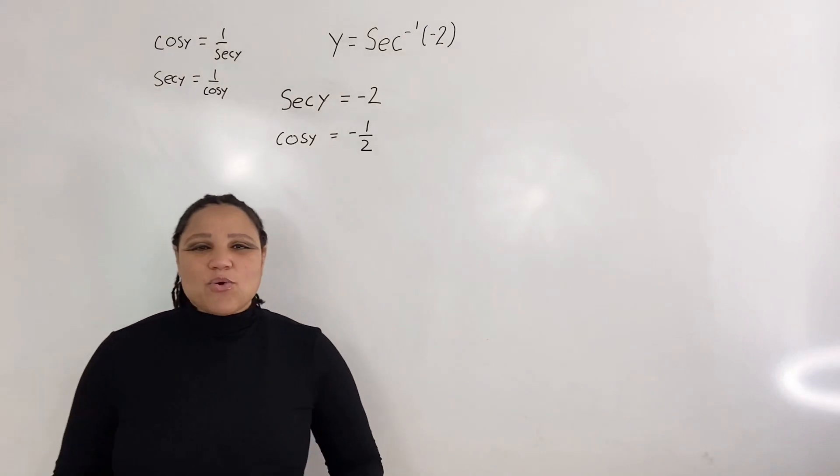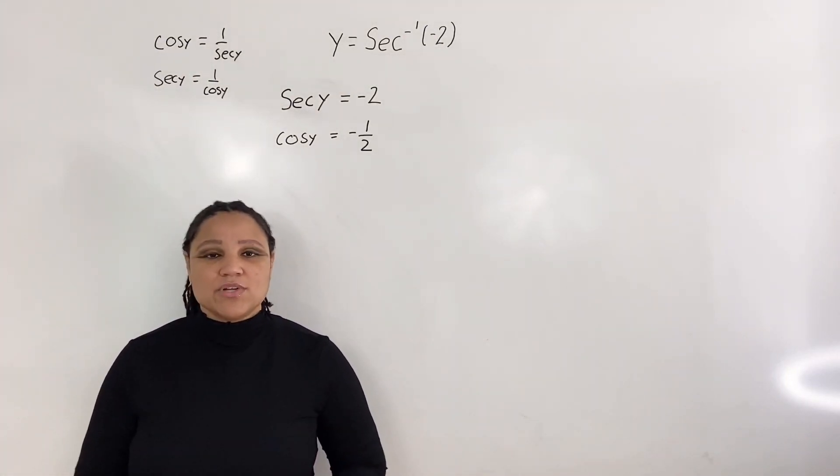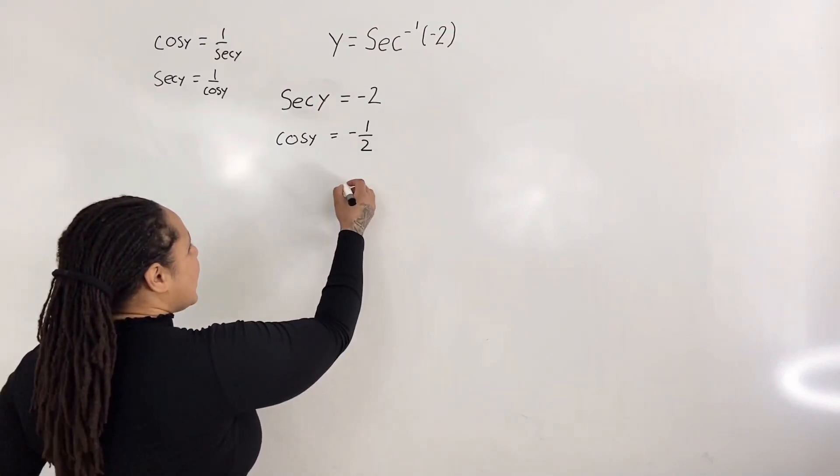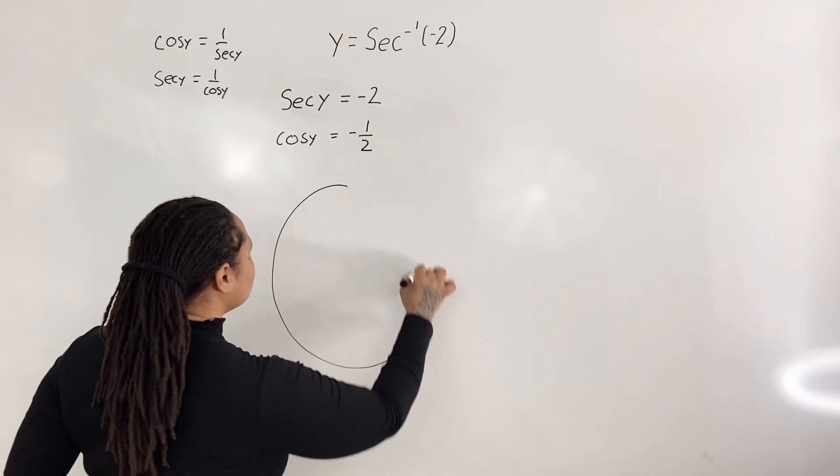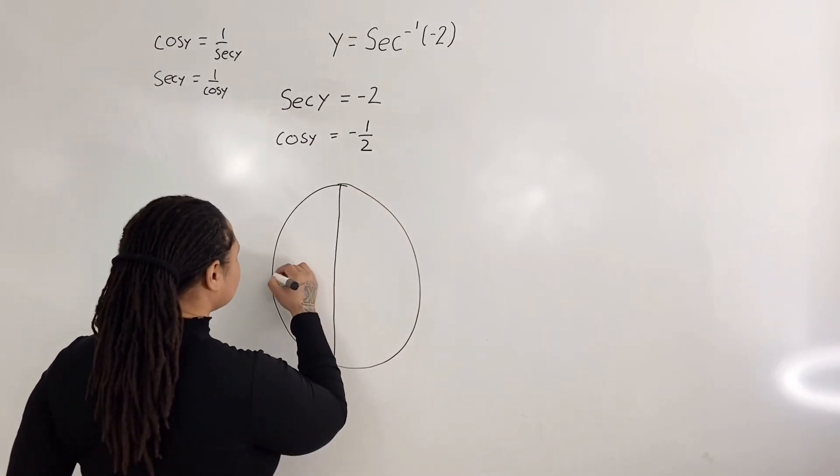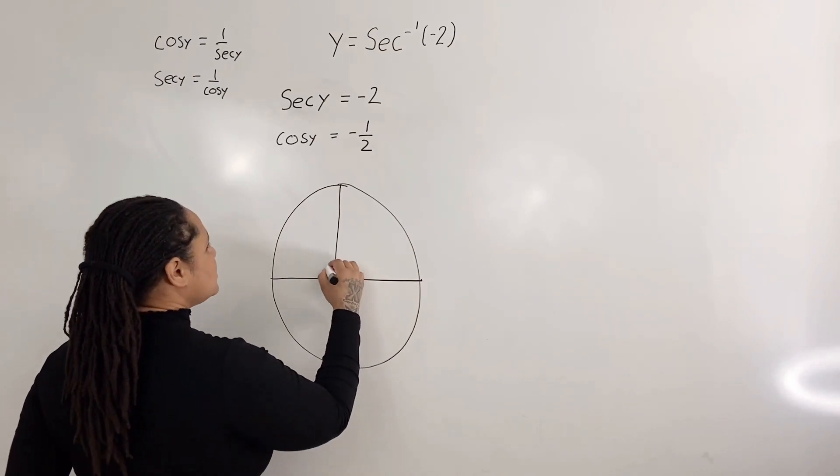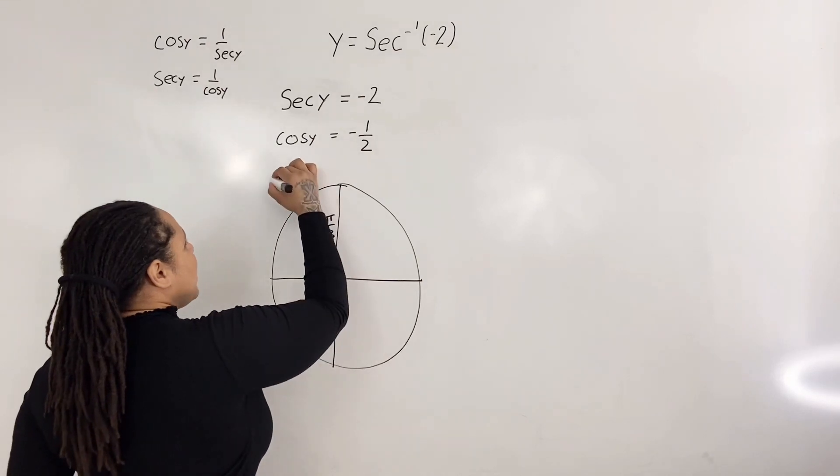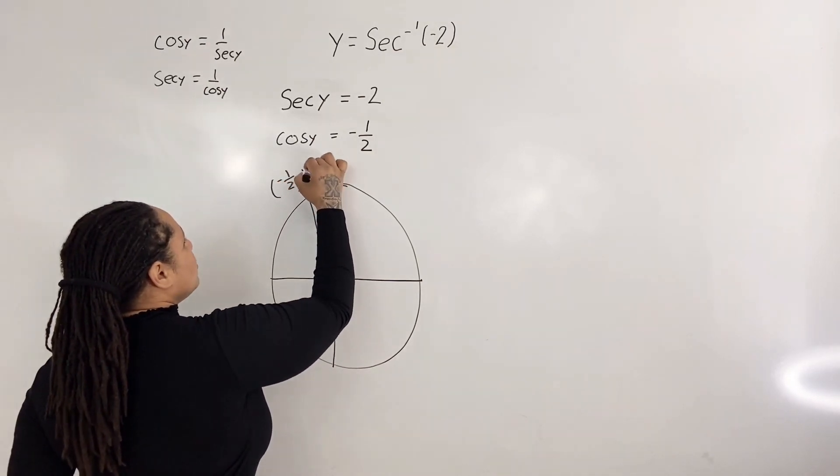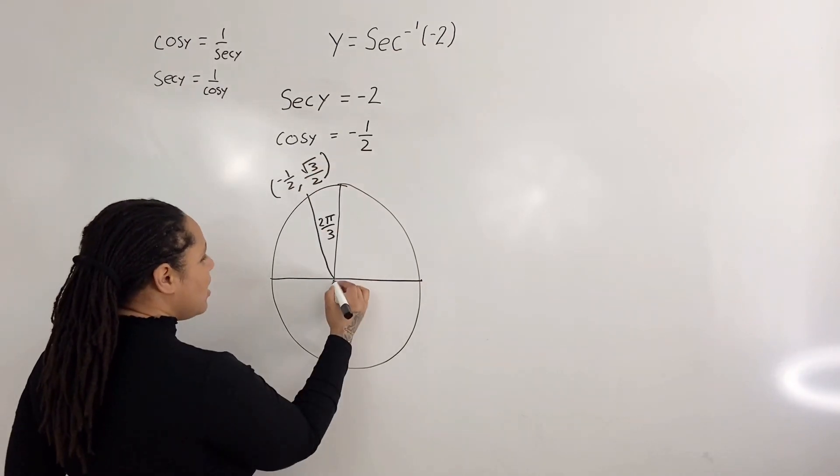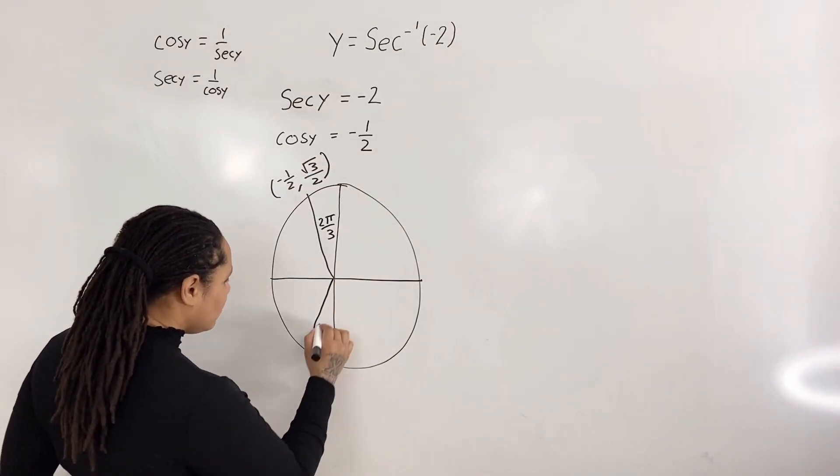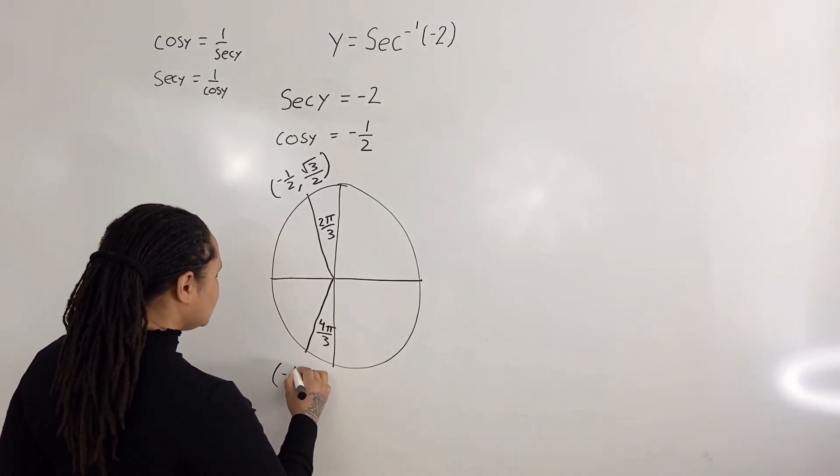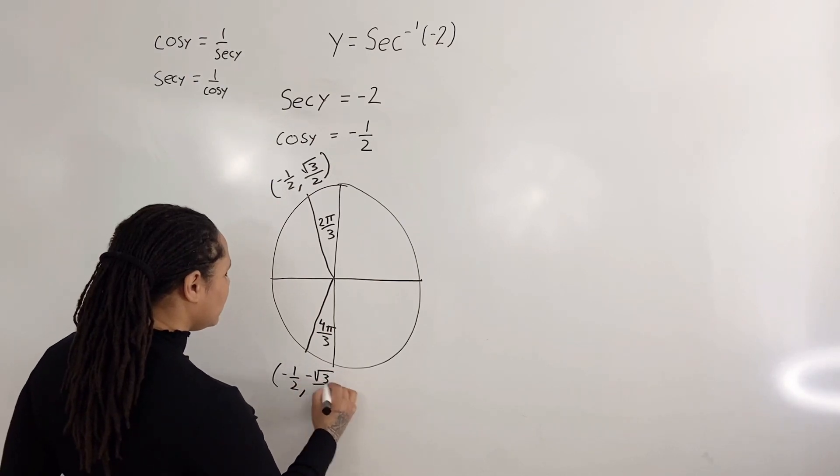Now we are going to ask ourselves, where on the unit circle does cosine of y equal negative 1 half? So if I look at my unit circle, we know that at 2π over 3, we have coordinates negative 1 half, root 3 over 2. And we also know that at 4π over 3, we have coordinates negative 1 half, negative root 3 over 2.